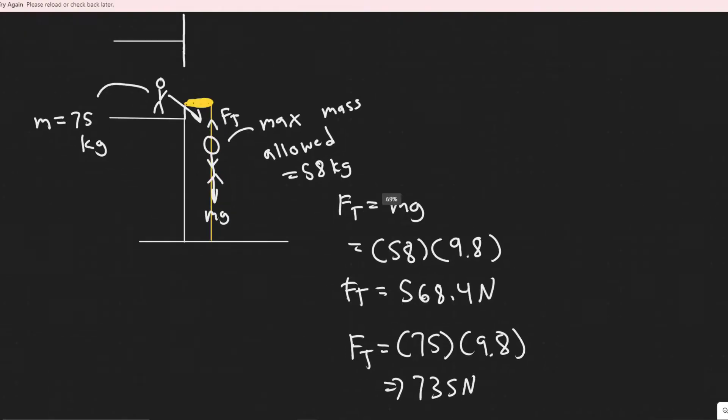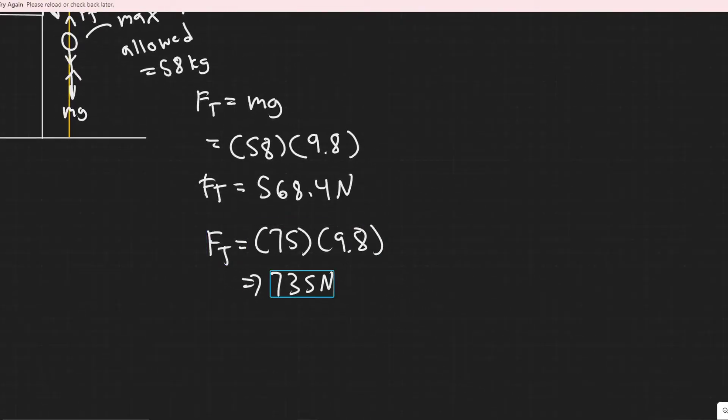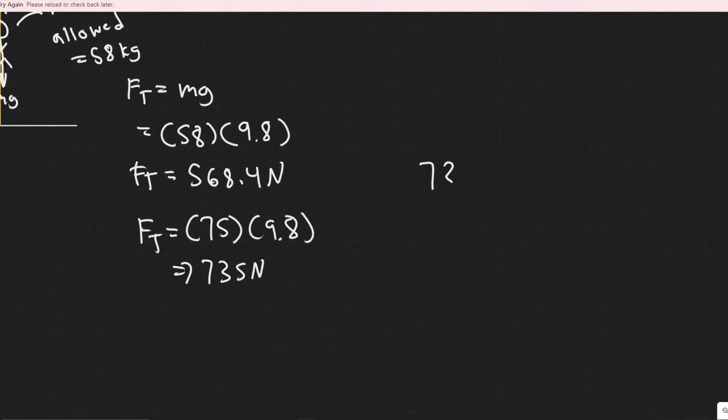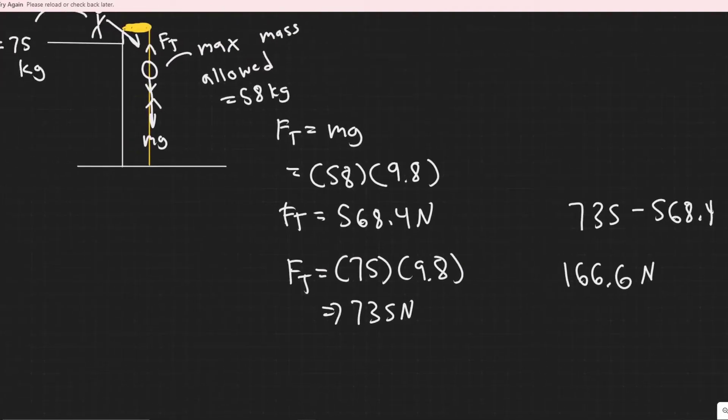And so what I want to show you is, what is the difference between these two values? We have 735 newtons minus 568.4 newtons. And if you did this, you would get a value of 166.6 newtons here. So 166 newtons is the difference